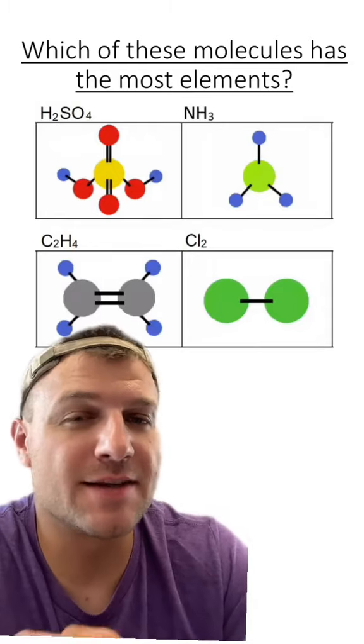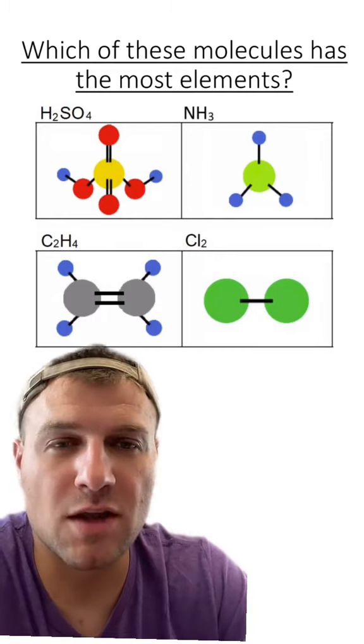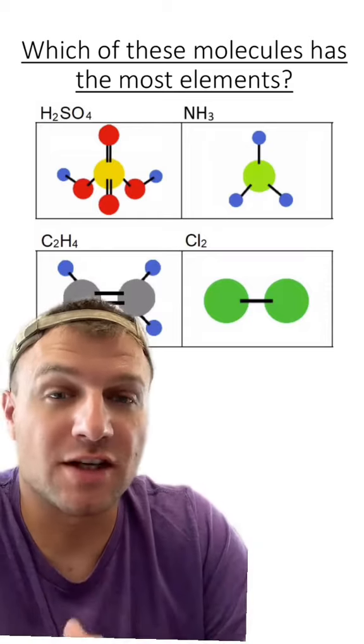Which of these molecules has the most elements? This question is specifically talking about the type of elements. So look at each molecule and figure out how many elements are in each. The answer is H2SO4, which has three different elements.